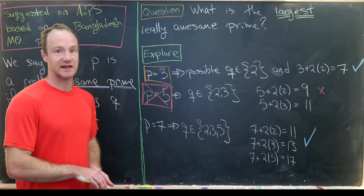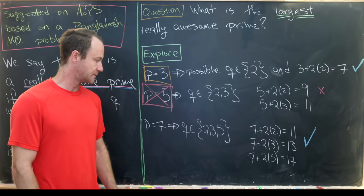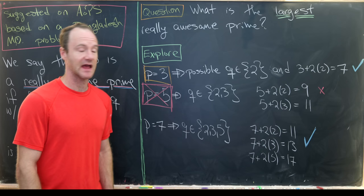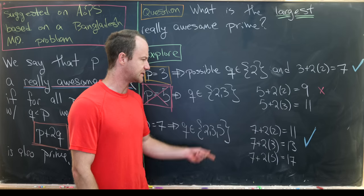Now let's look at the next case, p equals 7. So that gives us three choices for q: 2, 3, and 5.